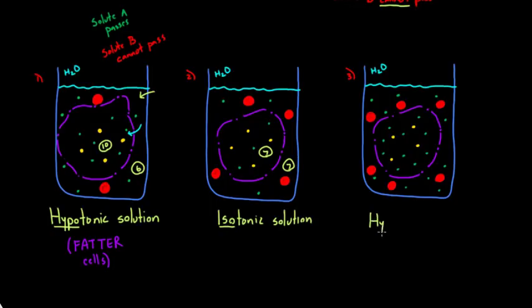On the last example, we have what we call a hypertonic solution. Because from the solution's perspective, it's got way more solute than what was on the inside of the cell. Here, we have more on the outside than the inside. We have 16 out here, and on the inside we have 14. So it has more solute on the outside.